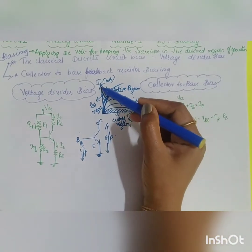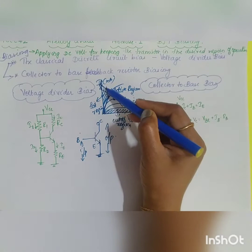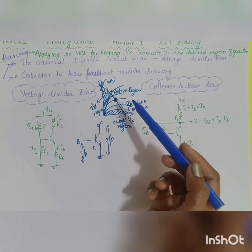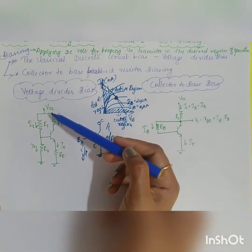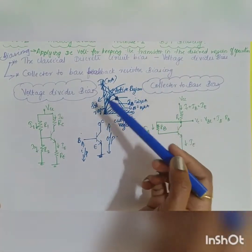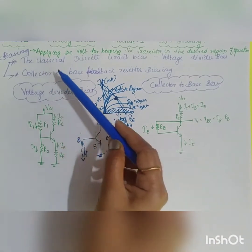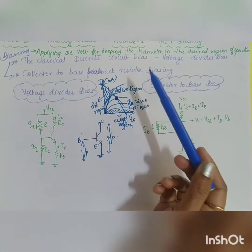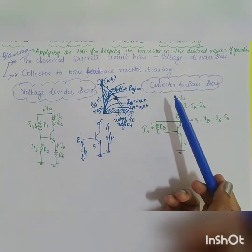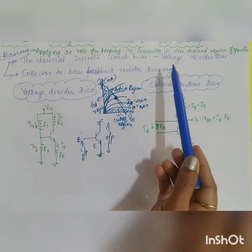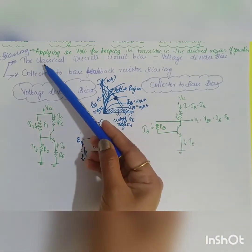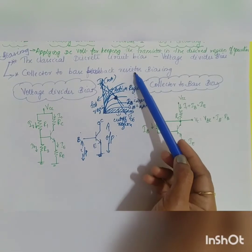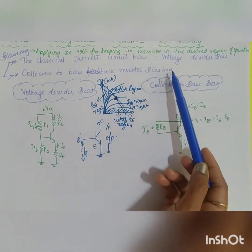The operating point is given by means of the DC load line and AC load line. Here we are going to do DC analysis, so we are interested only in using the DC supply. In this chapter, you are going to study two different types of biasing: one is called voltage divider bias, which is the classical discrete circuit bias, and the second is called collector-to-base feedback resistor biasing.